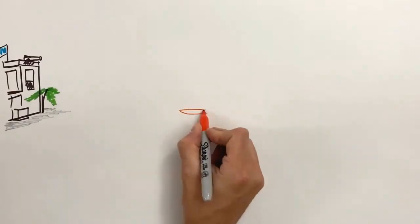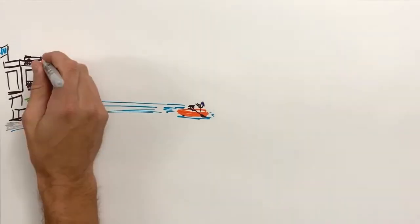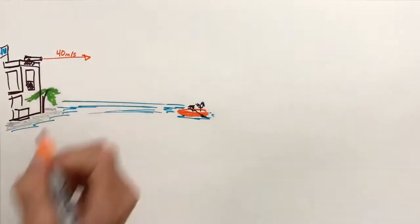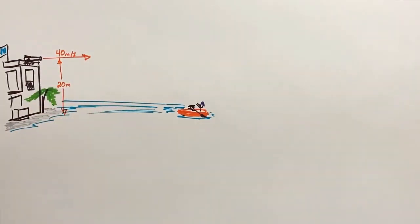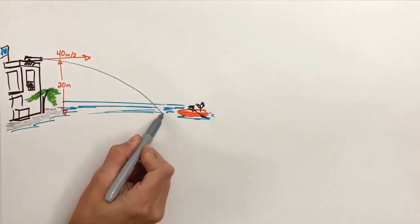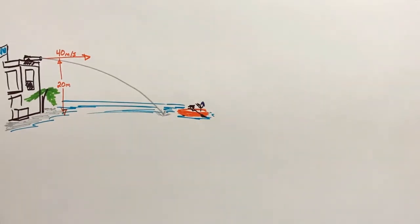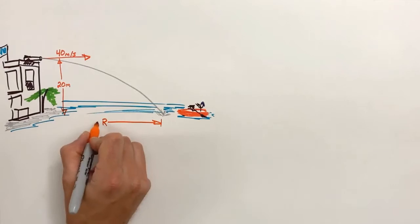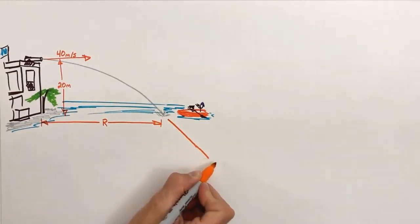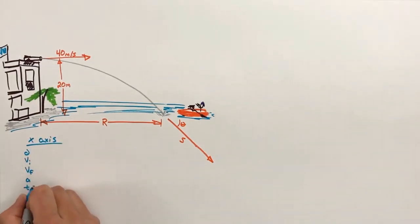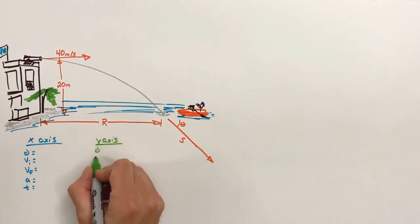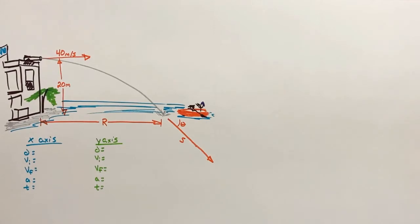The soldiers of the fortress are going to fire a cannon horizontally at 40 meters per second. The cannon is located on top of the roof of the fortress, which is 20 meters above the waterline. The shell is going to travel through the air and strike the water just in front of the pirate boat. In this problem, we're going to solve for the horizontal range of the cannon shell, and also find the speed and direction in which the shell is traveling when it strikes the water. Because the cannon shell is fired from the rooftop and lands in the water, it finishes at a different height than from which it was shot, which means we can't use the range equation.